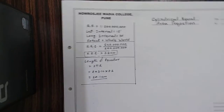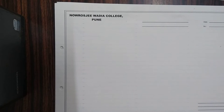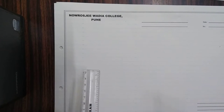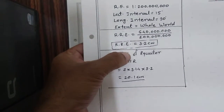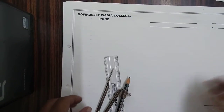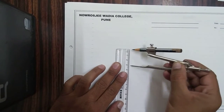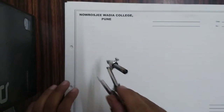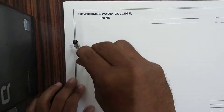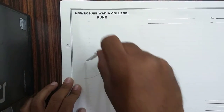With this brief data introduction, we will directly get started with the actual construction of cylindrical equal area projection. This diagram is very long so I'll require another page. We start with the RRE that is 3.2 centimeters. Using the scale with centimeter markings, I am putting my compass at 3.2 matching to zero. I am putting this at the middle-side part of my page and now going to draw one circle.